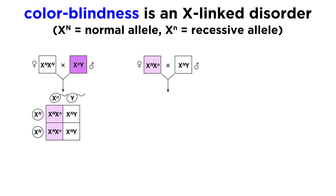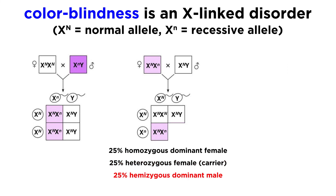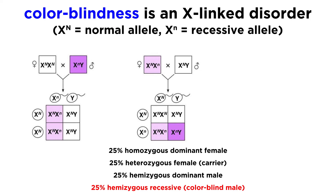Now if the mother is heterozygous and the father has the dominant allele, there is a 25% probability of offspring being homozygous dominant, 25% heterozygous and therefore a carrier, 25% hemizygous dominant, and 25% hemizygous recessive, and therefore colorblind.